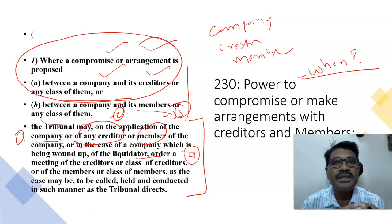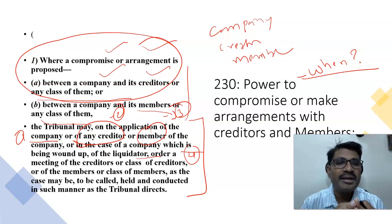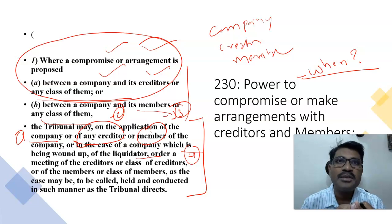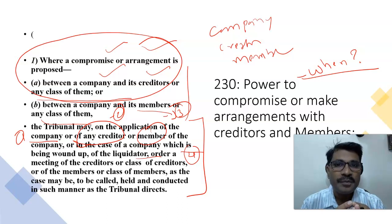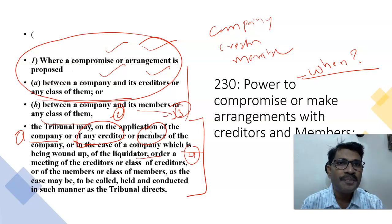Under Section 230 of the Companies Act, a compromise or arrangement is proposed. Importantly, Sections 230 to 234 serve as both a substantive clause and a procedural clause. As a lawyer, company secretary, or chartered accountant, if you want to file a petition for compromises and arrangements under Section 230, this serves as the procedural clause. You don't require the help of any other laws — under Section 230 itself you can file petitions.